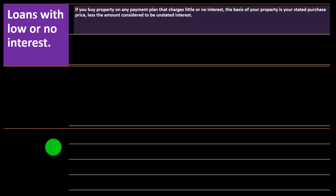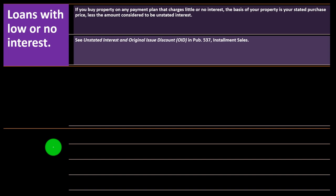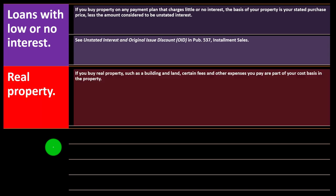For loans with low or no interest: if you buy property on a payment plan that charges little or no interest, the basis of your property is your stated purchase price less any amount considered to be unstated interest. Any reasonable extended loan would include interest because of the time value of money, so if the interest isn't stated you have to assume it's there. See the unstated interest and original issue discount (OID) rules in Publication 537.